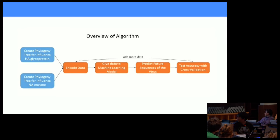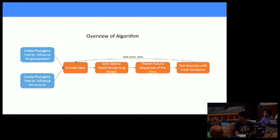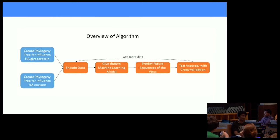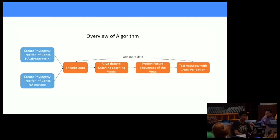This is a diagram I drew showing the overview of everything I would do. I would create a phylogenetic tree for each protein — pretty much the grandparent-to-parent-to-child relationships between flu strains. Next, I would encode the data. Then I would give the data to my scikit-learn algorithm, test the accuracy using cross-validation, add more data, and just continue doing this until I reached a favorable result.